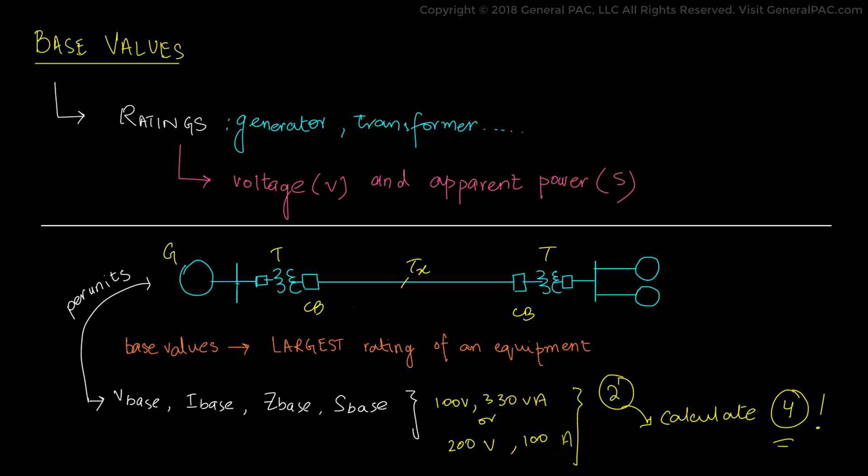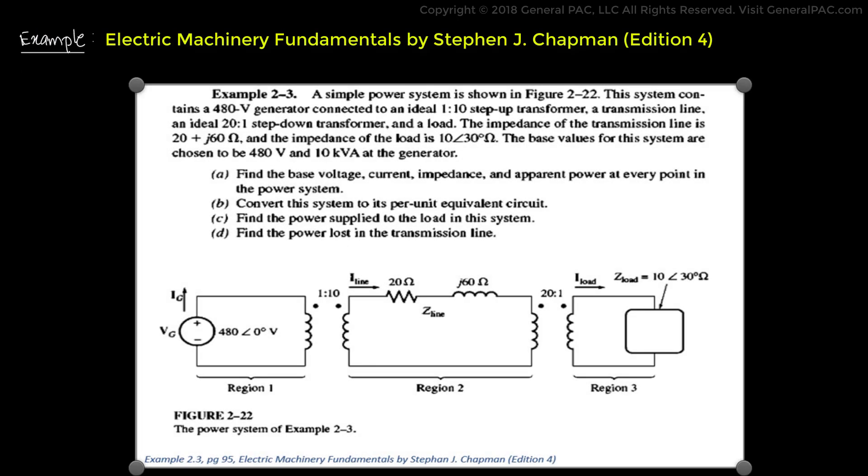Now let's understand this by way of an example from a book called Electric Machinery Fundamentals by Stephen Chapman, edition number 4. Now in this example, we are given a generator in region 1, which is at 480 volts at 0 degrees.